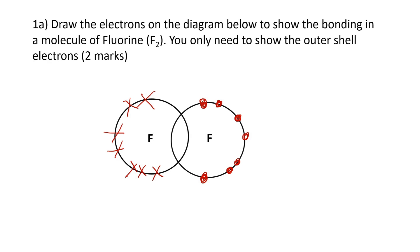We can see each fluorine atom has seven electrons on the outer shell, so each atom will need one more to complete that outer shell and be stable. So to complete the outer shell of the left hand one we're going to share one of the dots from the right hand atom. I'm going to rub out one of the electrons and instead place that electron in the sharing zone. And if the right hand atom is sharing one electron with the left hand atom, that atom shares one back, so I'm going to rub out one of the crosses and place that electron in the sharing zone.